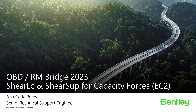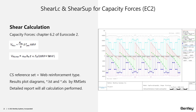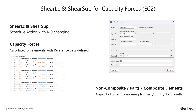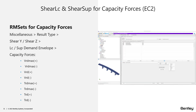In OBD and RM 2023, capacity forces for shear and torsion according to Eurocode were introduced. Beyond the shear reinforcement area values and capacity factors, the user can now obtain capacity forces according to chapters 6.2 and 6.3 of EC2. Capacity forces are calculated for total results, no change was done in the schedule action, and plot diagrams can be produced throughout RM Sets definition.